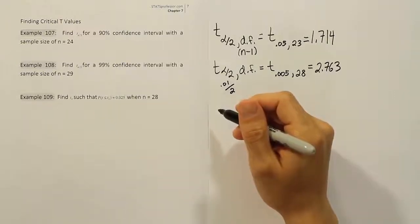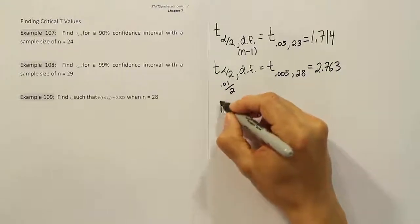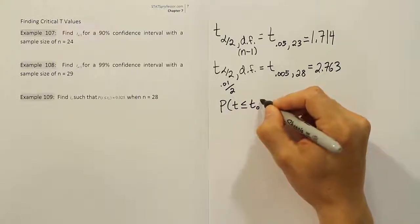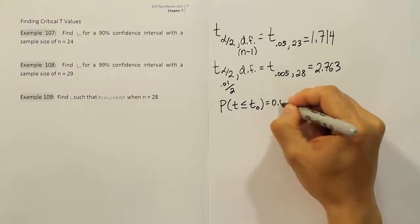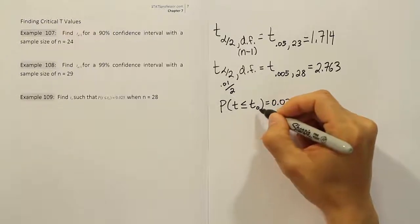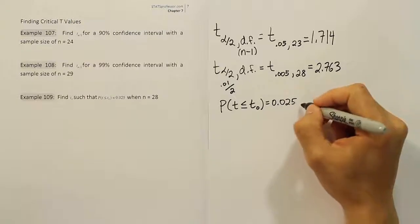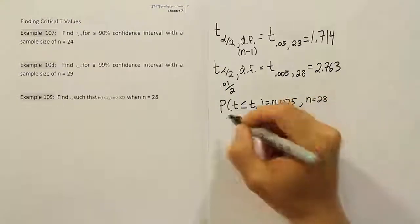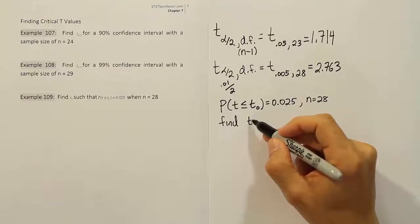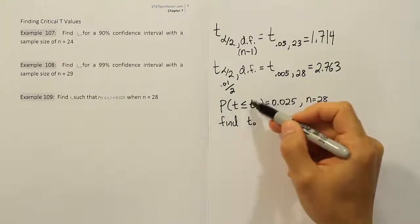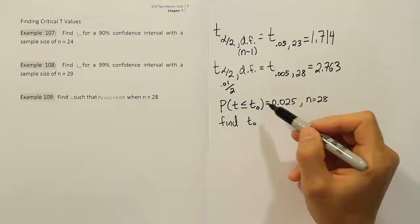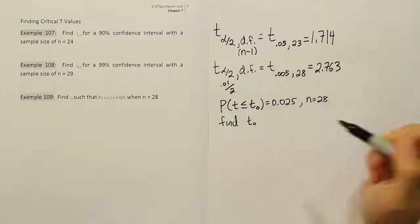Now for example 109, this one has special notation. We want to find the t₀ value given that the sample size is 28. The probability statement says the probability that a t value is less than or equal to t₀ equals two and a half percent. So we need to find the number t₀ such that that probability is only 2.5%.